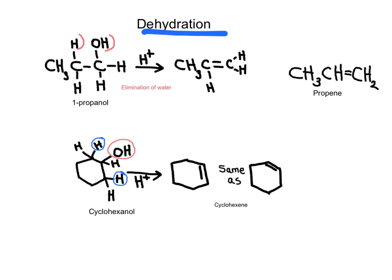In our first case, we see elimination of an OH and a hydrogen from an adjacent carbon to produce the molecule of propene. In our second case, this is a secondary alcohol — cyclohexanol. We see two neighboring hydrogens that can be eliminated. When we look at the product, it will be the same: if I remove this OH and this hydrogen, I'm forming this carbon-carbon double bond; and if I remove this OH and this other hydrogen, it's forming the double bond on the other side. But when we name the substance, it's going to be the same product.